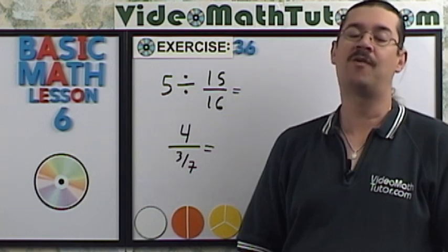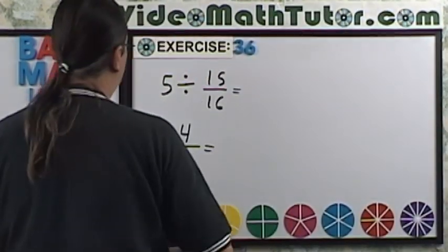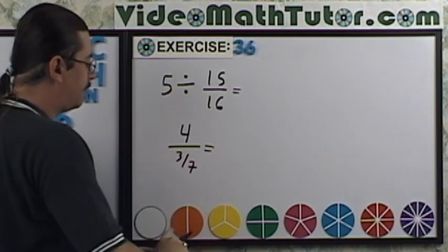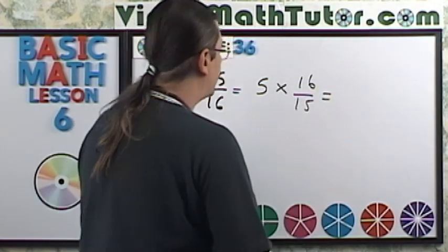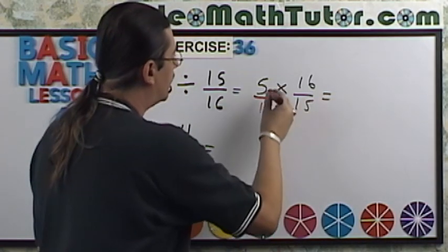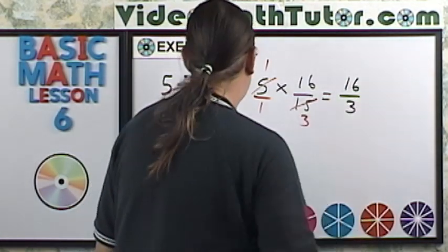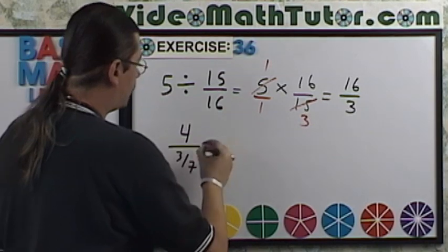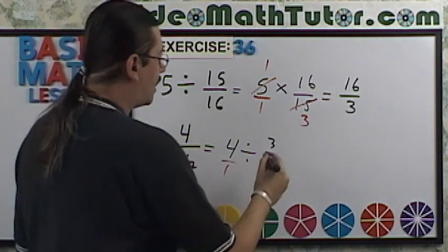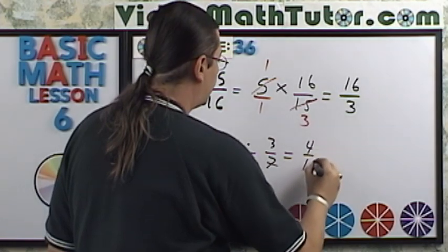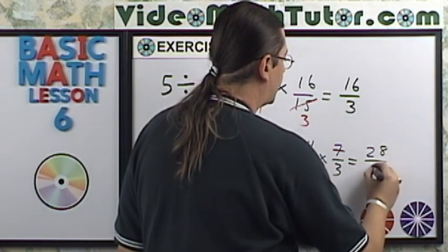For exercise 36, I'd like you to perform the following operation. So for the first one, I'm going to change this into a multiplication. So I'm going to have five times 16 fifteenths. And let's just put that over one. Things can cancel nicely. So multiply that out, and we're going to get 16 thirds. Over here, I'm going to rewrite this to get four divided by three-sevenths. Again, let's put the four over the one and invert and multiply. So you get four over one times seven-thirds equals, well, nothing cancels. So we're just going to be left with twenty-eight thirds.